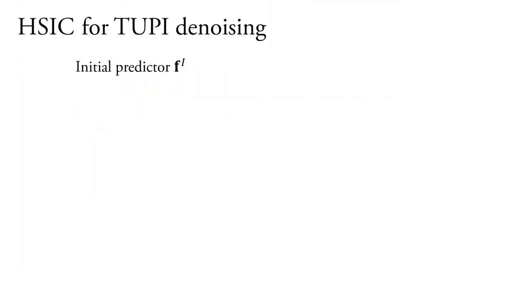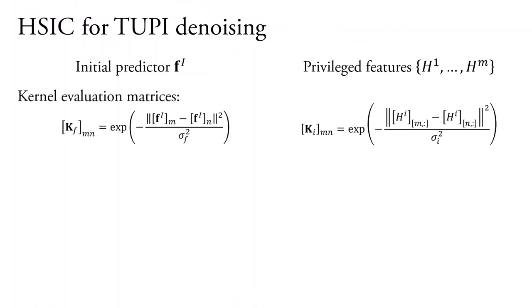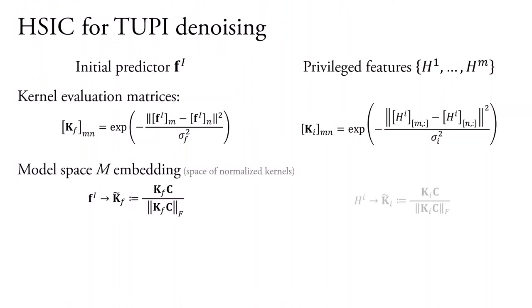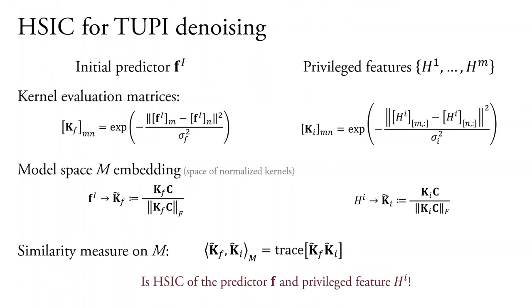Specifically, given our initial predictor F and features H, we define the corresponding kernel matrix evaluations KF and KI using Gaussian kernels as before. Then, we obtain our manifold embedding by casting the predictor and privileged features to their normalized kernel matrices. In this case, the natural similarity measure on the manifold is given in the form of the inner product between the corresponding kernel matrices. This is precisely the HSIC between the predictor F and the privileged features HI when we consider them as sampled from random variables.